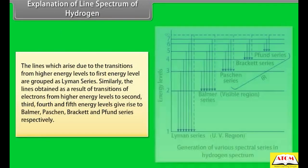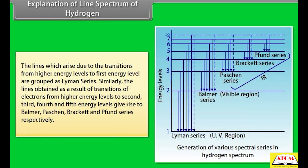The lines which arise due to transitions from high energy levels to the first energy level are grouped as the Lyman series. Similarly, transitions to the second, third, fourth, and fifth energy levels give rise to the Balmer, Paschen, Brackett, and Pfund series respectively.